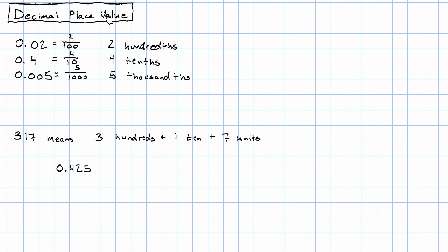If I write the number 0.425, we said it looked like this was tenths and then this digit was hundredths, and then this last digit was thousandths. So does this number mean four tenths plus two hundredths plus five thousandths?